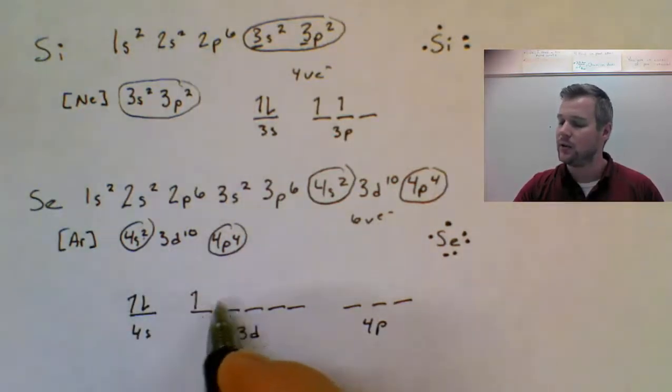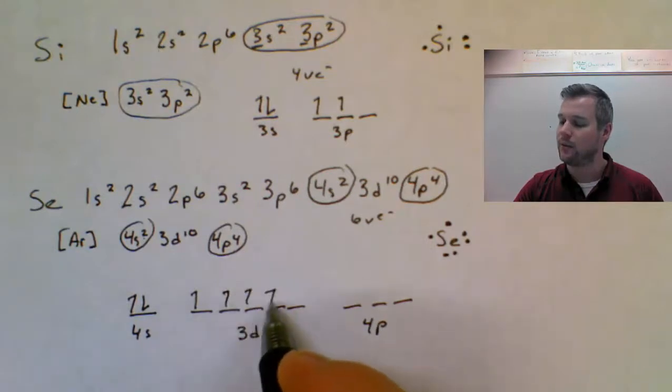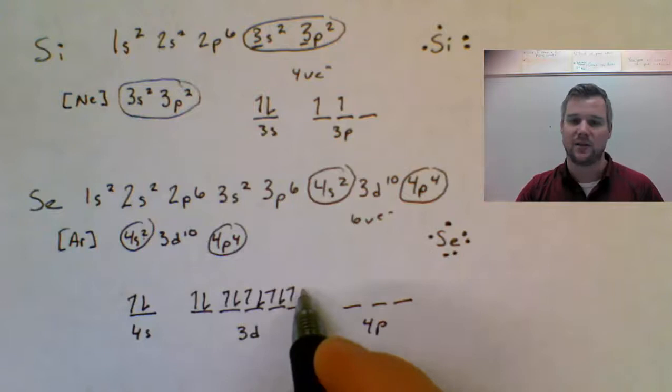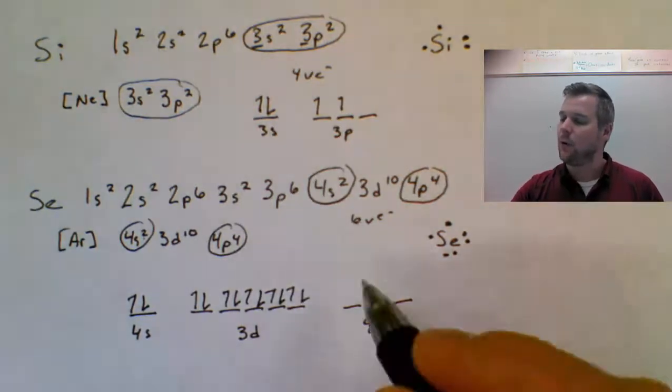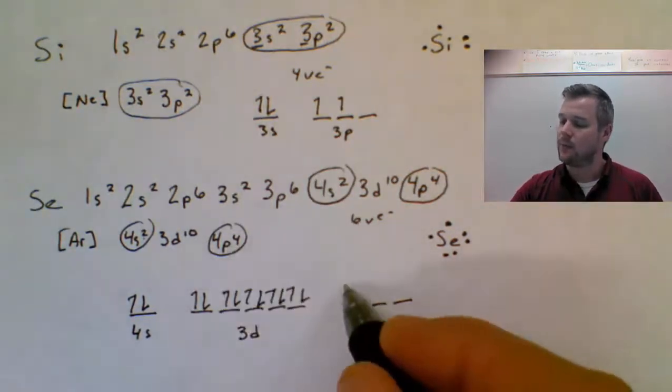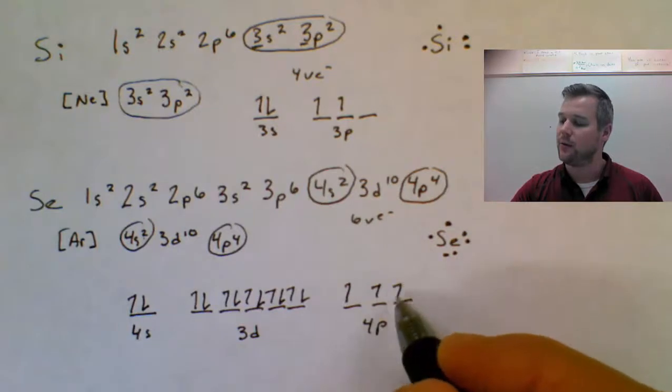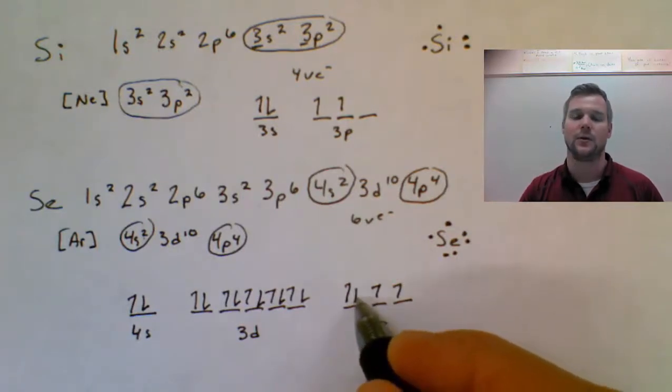3D10, each orbital gets one before any of them are doubled up. And notice we're using half arrows, it's a little faster. 4P4, up, up, up, there's three. My fourth one, by convention, is always going to be the first orbital.